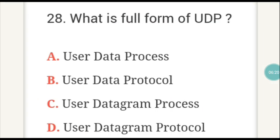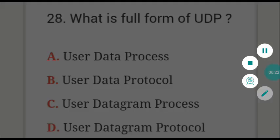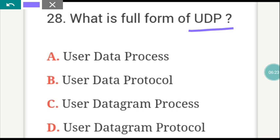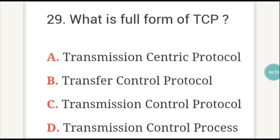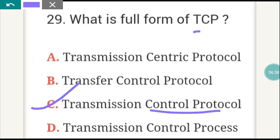The next question: what is the full form of UDP? UDP full form is D — User Datagram Protocol. What is the full form of TCP? TCP full form is C — Transmission Control Protocol.